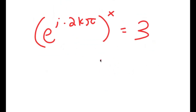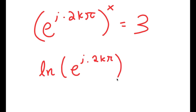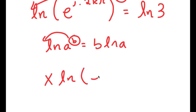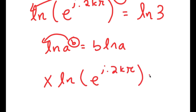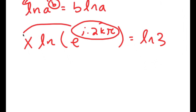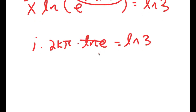So now to solve this, I'm going to do what I did at the start — take the natural log or ln on both sides. So I get ln of e to the power of i times 2k pi, to the power of x, is equal to ln of 3. If I have something in the form ln a to the power of b, I can move exponent b to the front. So I get x times ln of e to the power of i times 2k pi is equal to ln of 3. Now I'm going to use this property again and move the exponent to the front as well. So I get x times i times 2k pi times ln e is equal to ln of 3. And ln and e cancel out, so I'm left with x times i times 2k pi is equal to ln 3.